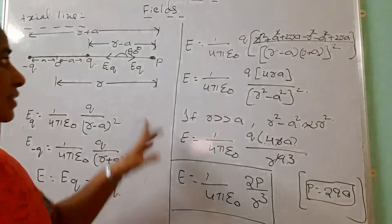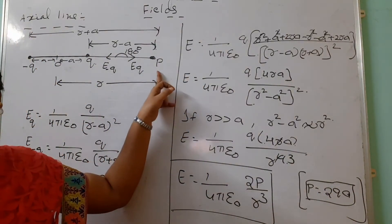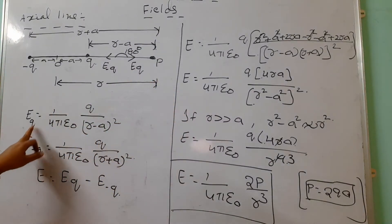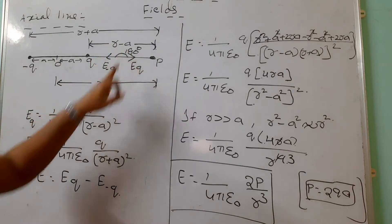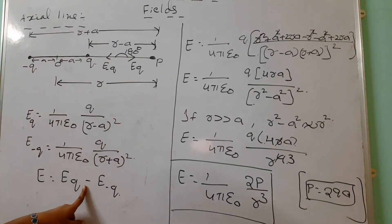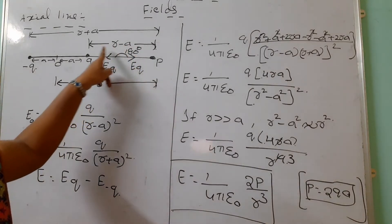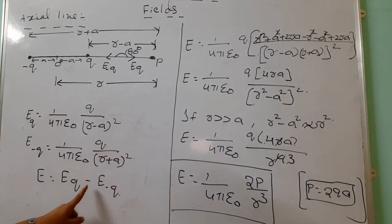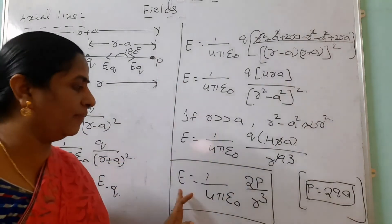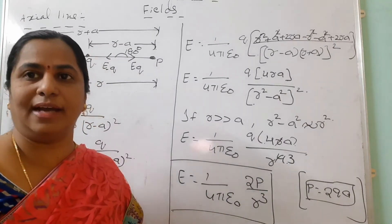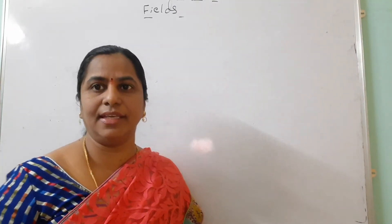The most important part is the diagram — from the diagram we can identify: distance from positive charge is R − A, distance from negative charge is R + A. Since intensity is a vector, the 180° angle gives E_Q minus E_−Q. After simplification, intensity on the axial line is E = (1/4πε₀) × 2P/R³.